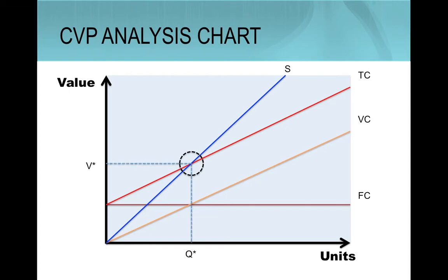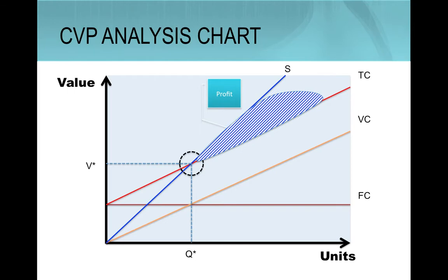The break-even point is represented in value and quantity as we can see by this chart. It means that if the company produces or sells above this critical amount, it is in a profit area. If the company produces or sells below this critical amount, it is in a loss area.